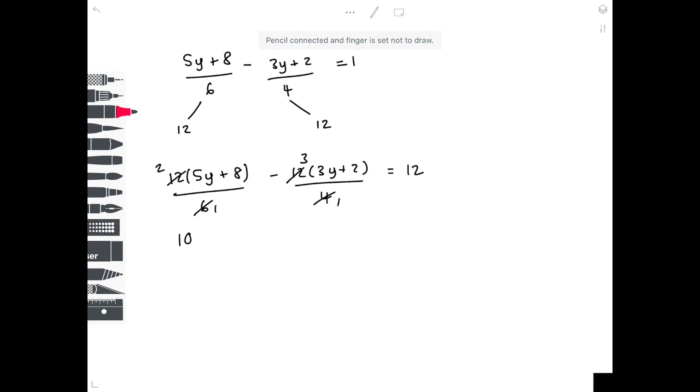So 2 times 5y is 10y. 2 times 8 is 16. Minus 3 times 3y is minus 9y. Minus 3 times plus 2. Don't confuse your signs. That will be minus 6. And we make that equal 12.